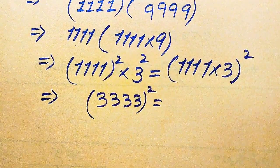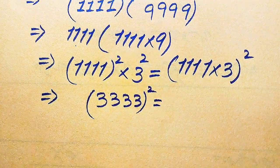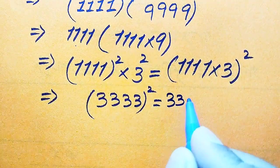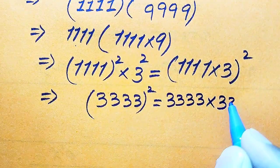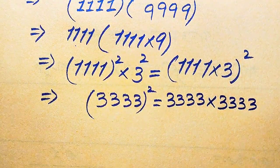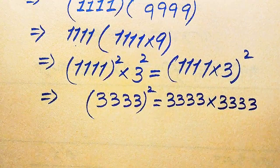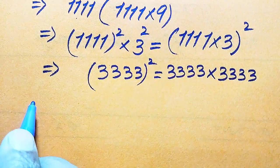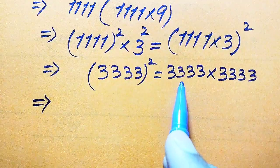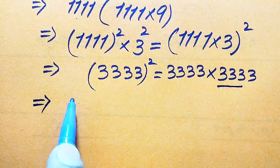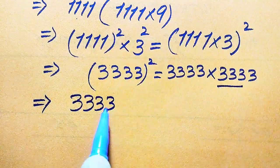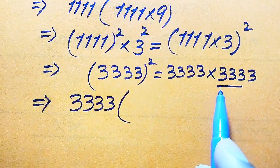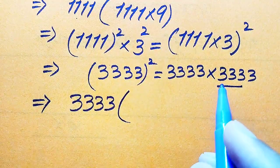The meaning of squaring a number is that we multiply that number by itself. So 3333 squared means 3333 multiplied by 3333. Because these are very large numbers and a calculator is not allowed, here is a nice trick to easily multiply bigger numbers. We break the second 3333 into thousands, hundreds, tens, and ones: three thousand plus three hundred plus thirty plus three.